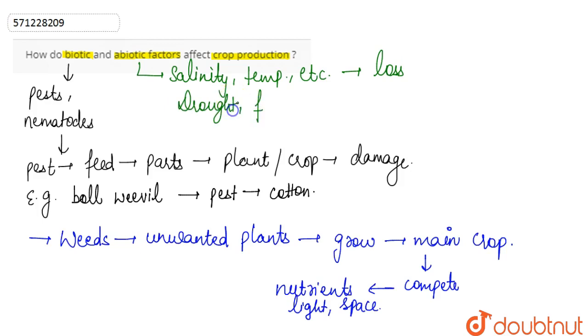...and floods are unpredictable natural calamities that can destroy the entire crop, leading to huge losses for farmers. This is how biotic and abiotic factors affect crop production.